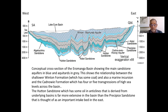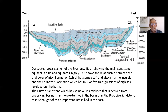We'll see something of that in a few minutes' time. This is a conceptual cross-section of the Eromanga Basin showing the main sandstone aquifers in blue and aquitards in grey — the impervious layers that confine the aquifers, allowing them to be artesian or sub-artesian. Otherwise, they wouldn't be retained as a system allowing artesian rise of the water.